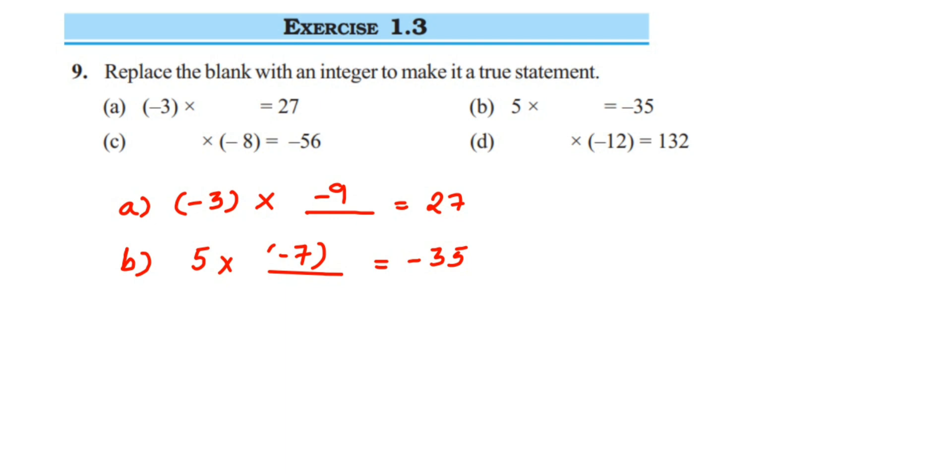Then the third problem: blank times (-8). What should we multiply to this -8 so that the final answer will be -56? When does 56 appear in a table? It's 7 times 8 equals 56, right? So we'll get 7 times 8 equals 56.